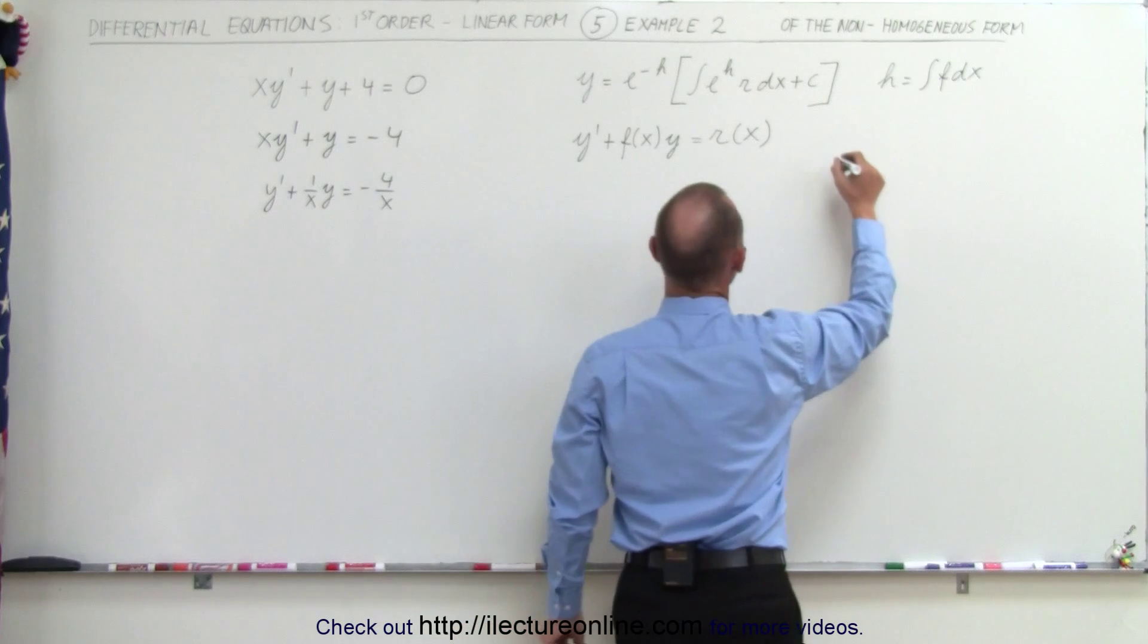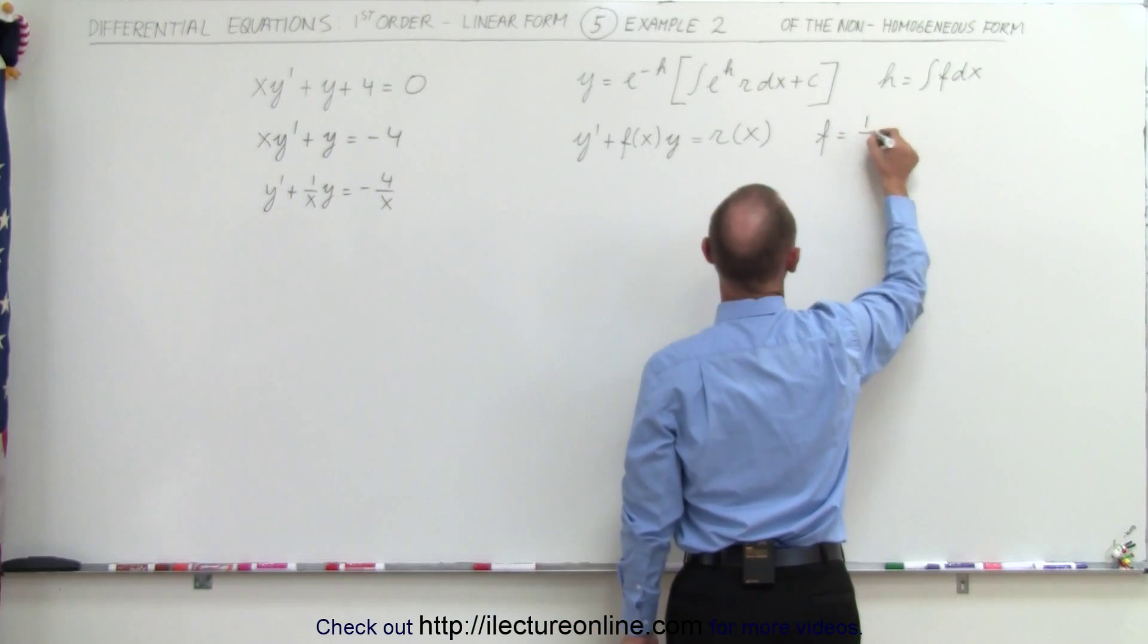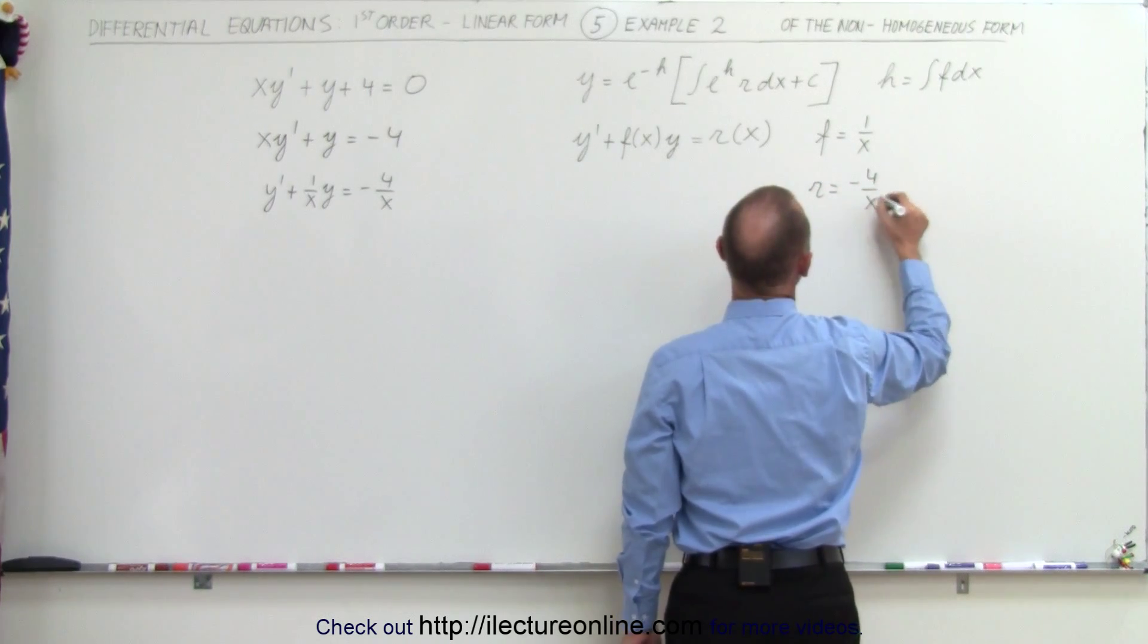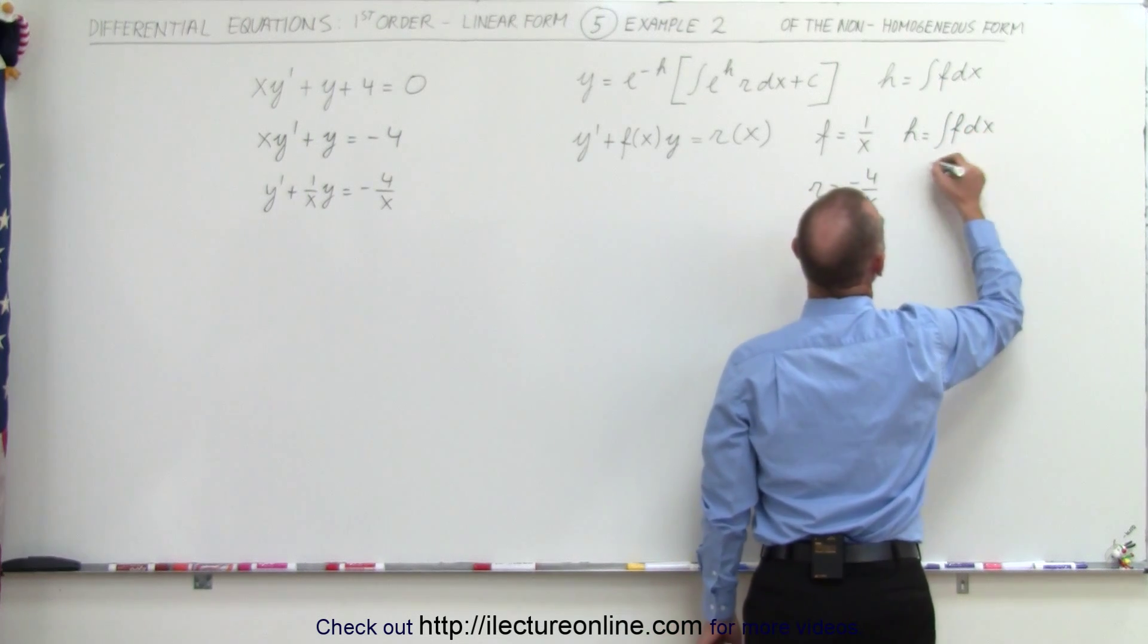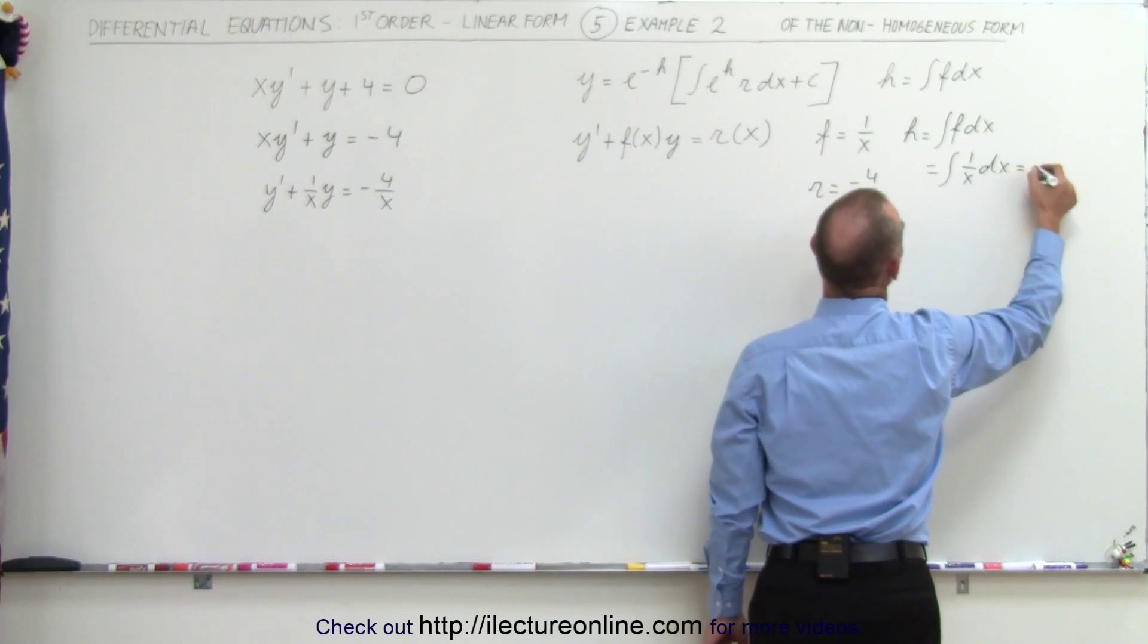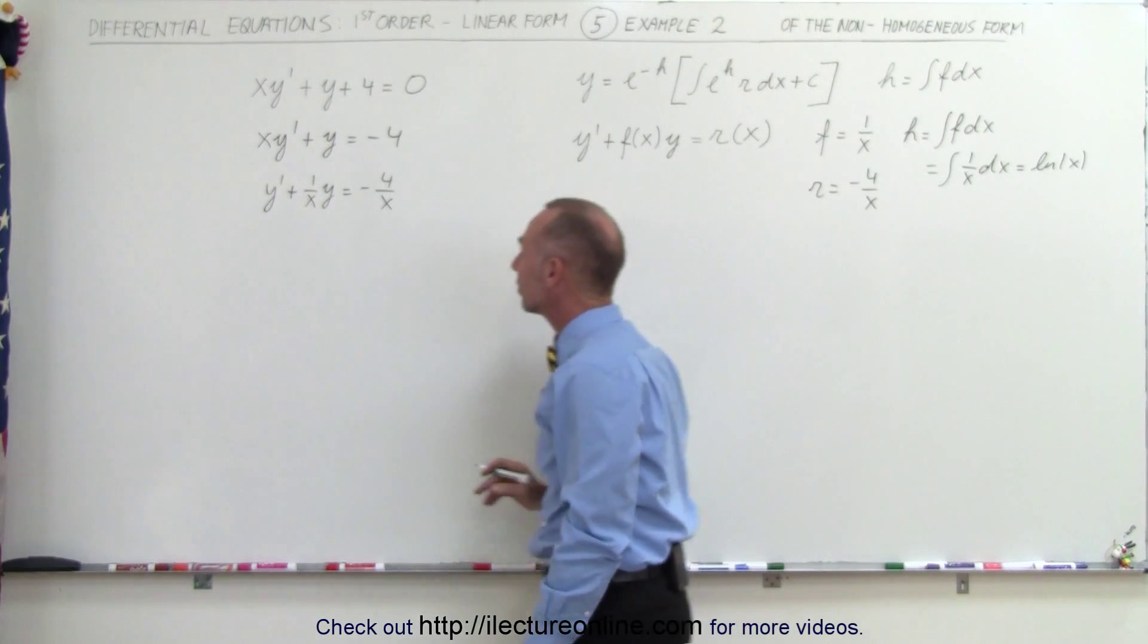So let's write that down. So we have f is equal to 1 over x, r is equal to minus 4 over x, and h, which is equal to the integral of f times dx, is equal to the integral of 1 over x times dx, which is equal to the natural log of x. So in this case, h is equal to the natural log of x.